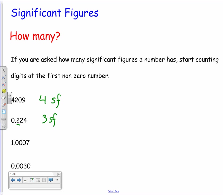The next one, 1.0007 — even though those three zeros appear in the middle, each and every one of them is significant because it's followed by a seven, and that seven gives us an idea of the accuracy of the number. So starting counting at the one, we can see that there are five significant figures in this number.